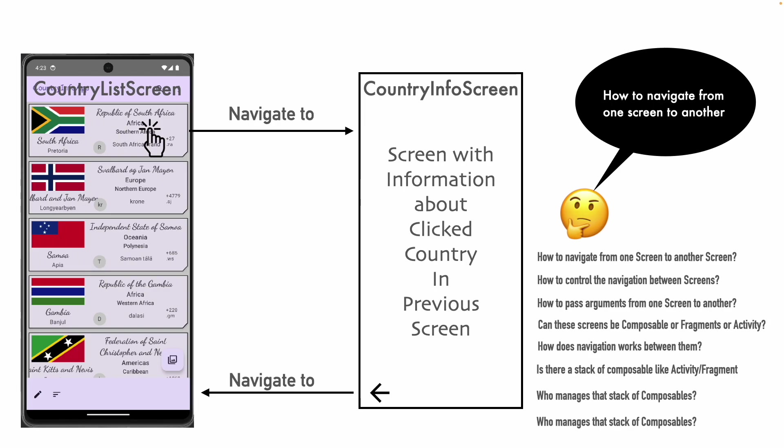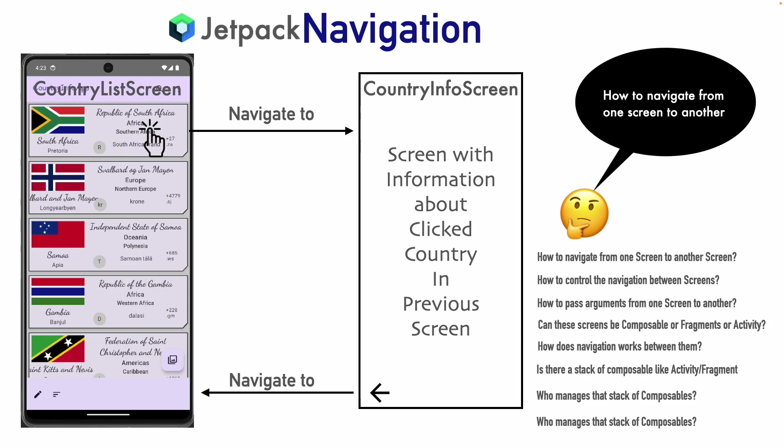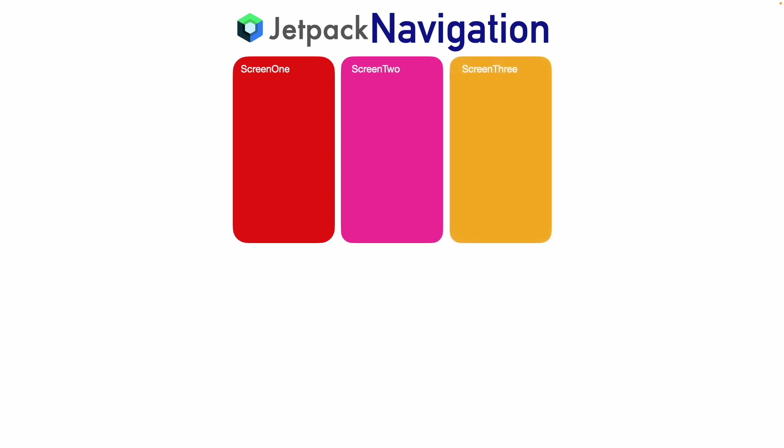So in the next couple of videos, we will basically discuss the navigation with Jetpack Compose in a very detailed manner. So let's start with a very clean slate. Let's assume that you have screen one, screen two and screen three. All of these screens can be built using composables or it could be an activity or even a fragment. But right now for simplicity, since we are working with Jetpack Compose, we are only going to talk about composables.